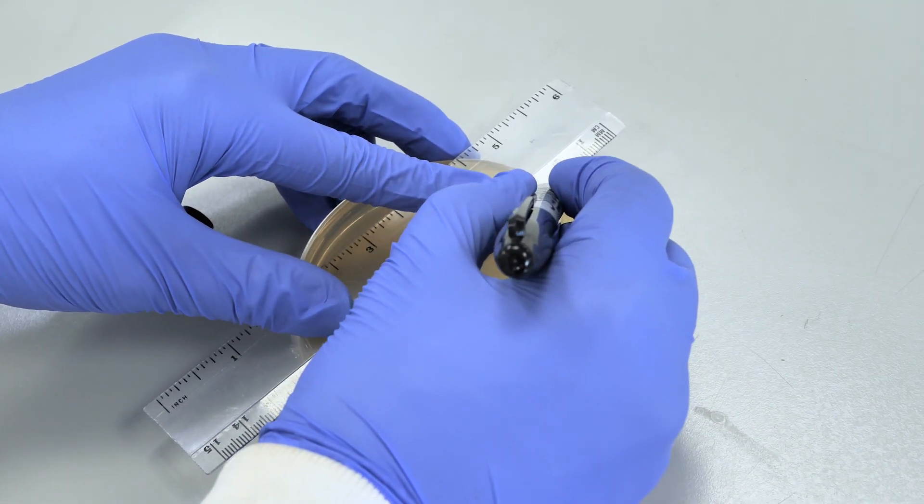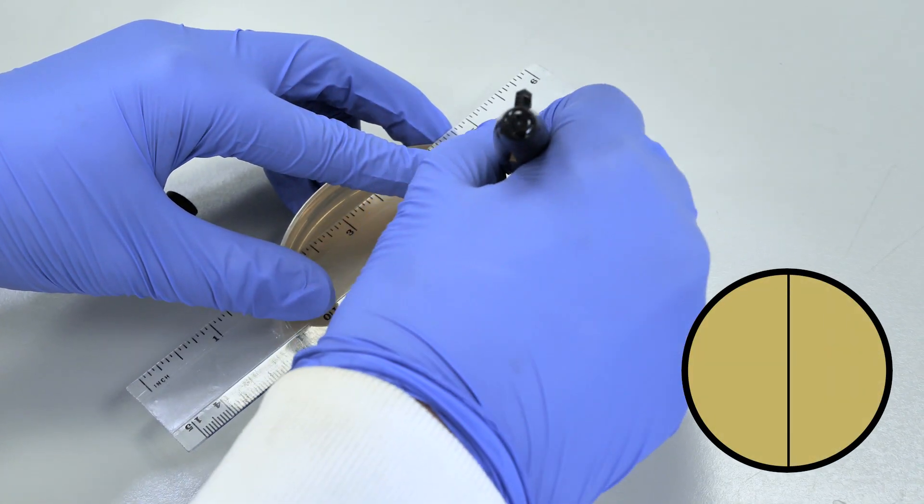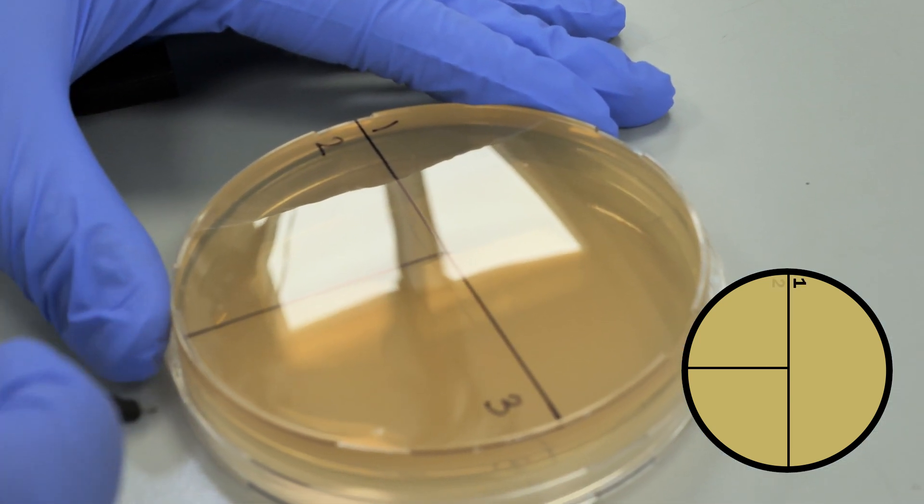Next, divide your plate into three sections using a T-shaped division, numbering each section as shown.